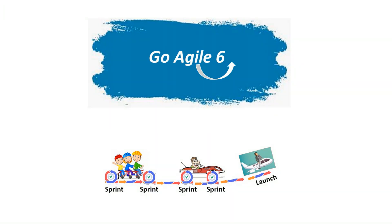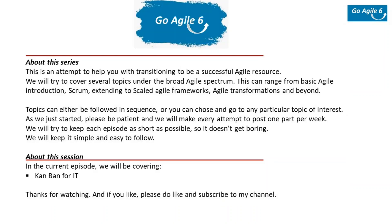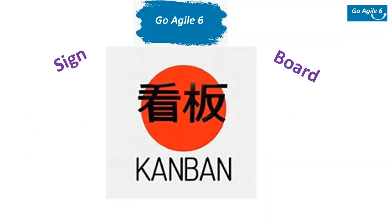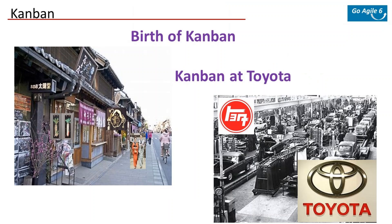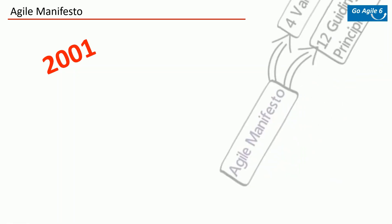Hello friends, welcome back to Go Agile 6. Last time we started Kanban and looked at its birth and how it got adopted at the Toyota Production System. Today we will look at how Kanban found its way into IT and how it became one of the popular agile frameworks. Over time the Toyota Production System gained a lot of popularity globally, and project managers all over the world started trying it in different flavors.